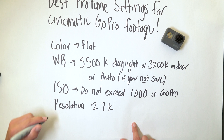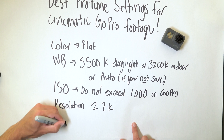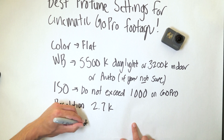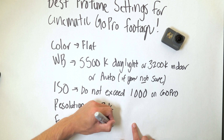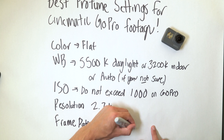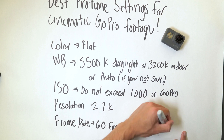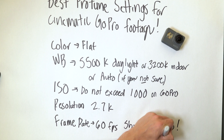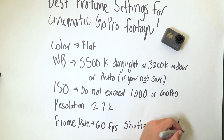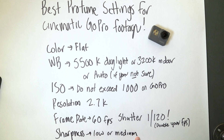My favorite resolution to shoot on GoPros is 2.7K. I'd love to shoot everything in 4K, but I like to slow down my footage and use time remapping a lot, and the most you can get on a GoPro these days is 4K at 30fps — which doesn't allow me to slow down footage enough. So I shoot at 2.7K at 60fps, and I always set my shutter speed to 1/120th. For sharpness: if you don't do much color correction in post, set it to high for the best out-of-camera look. But if you like to mess with footage in post, set it to low or medium so you can dial in your sharpness precisely.